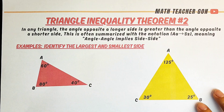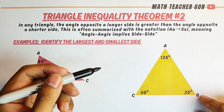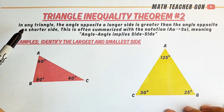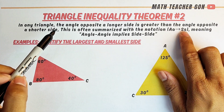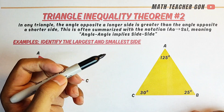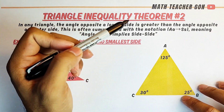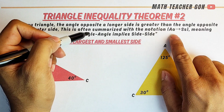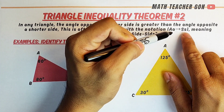Now let's go with Triangle Inequality Theorem Number Two. It states that in any triangle, the angle opposite a longer side is greater than the angle opposite a shorter side. A larger angle corresponds to the longer side, and a smaller angle corresponds to the shorter side.